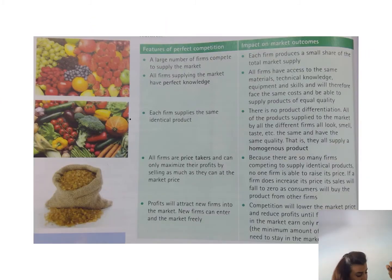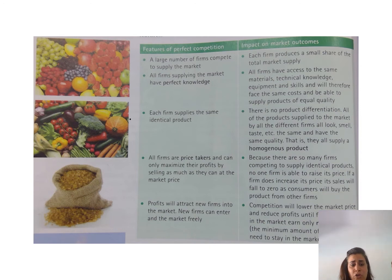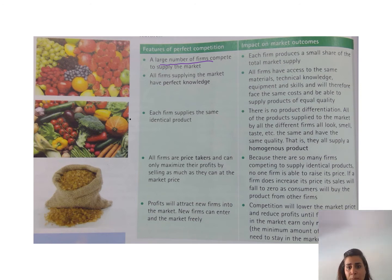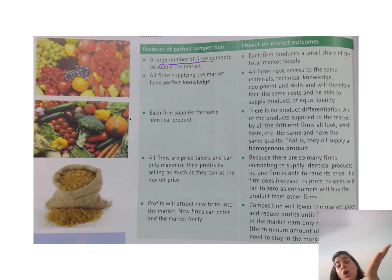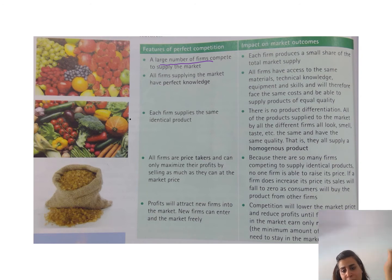We will start with page 248 and we are talking about the features of Perfect Competition and how it affects the market. In Perfect Competition, the first thing is we have a large number of firms competing with each other. Each firm produces only a small share of the total market supply. Whereas in a monopoly, it is producing a very large number of the total market supply.